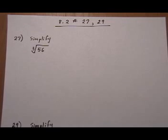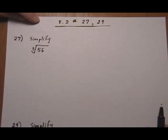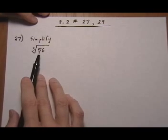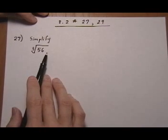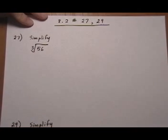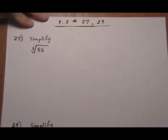8.2 number 27, 29, and we'll probably also fit in number 31. Here we're going to be doing some cube roots instead. We're going to simplify them, but we're going to use the same basic properties that we can do the roots separately for different factors that are inside the radical, and simplify means perform the radical as completely as possible and then we'll also deal with variables in there.